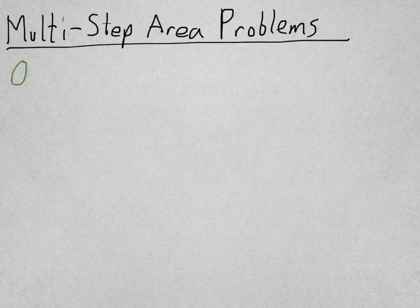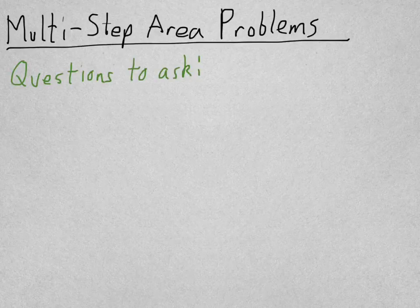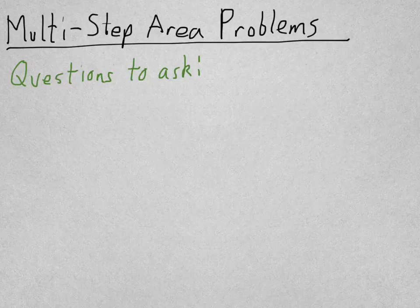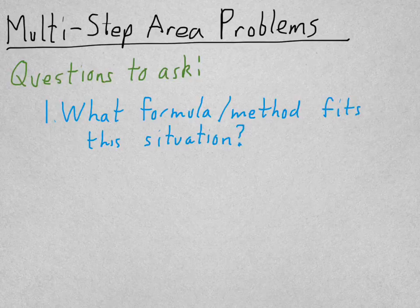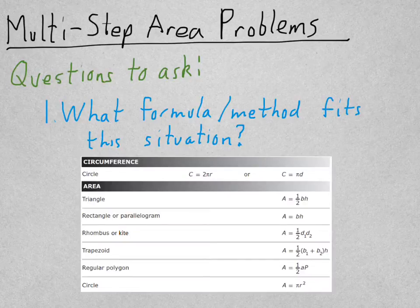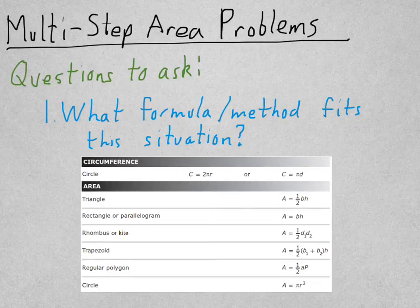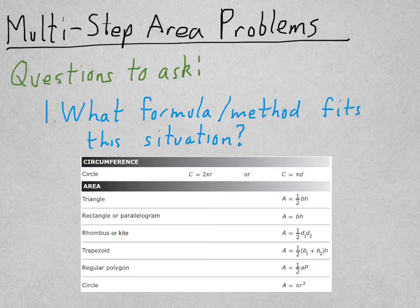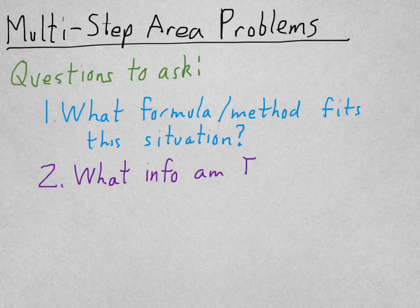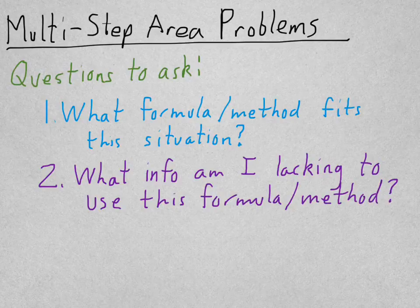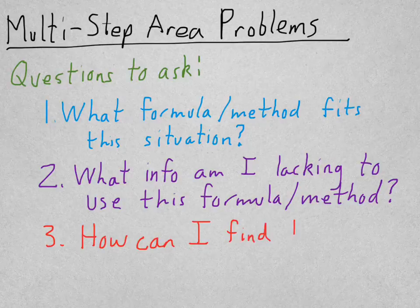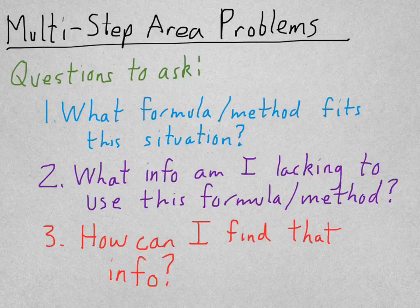Before we get into the first example, here's some questions to ask yourself. This will help you find the information that you need. First question is, what formula or method fits this situation? Since we're looking at area, it might be helpful to look at your area formula chart. Although I encourage you, as best you can, to memorize these so you don't have to look at it too much. After that, ask yourself, what info are you lacking in order to use your area formula? Then, how can you find that information?